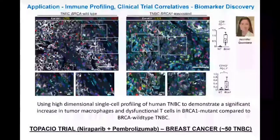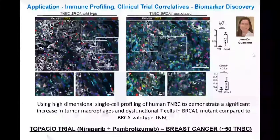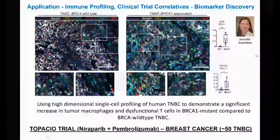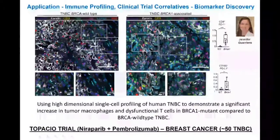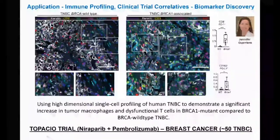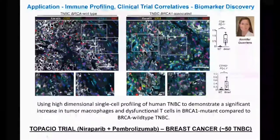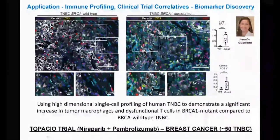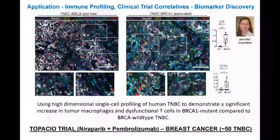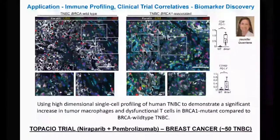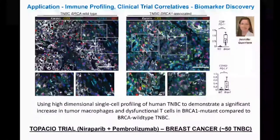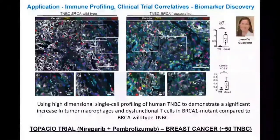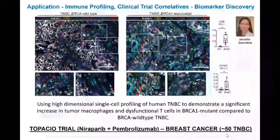Another application in immune profiling comes from Jennifer Guerrero at the LSP and Brigham and Women's Hospital/Dana-Farber Cancer Institute. She studies triple negative breast cancer and has shown that in BRCA-mutant TNBCs there are a large number of macrophages (in light blue) and a large number of dysfunctional T cells (in green) compared to normal triple negative breast cancer. Using high-dimensional single-cell profiling, she demonstrated a significant increase in tumor-associated macrophages and dysfunctional T cells in BRCA-mutant breast cancer, and is now preparing to analyze TAPACO samples — the TNBC arm — studying PARP and PD-1 inhibition in over 50 TNBCs.